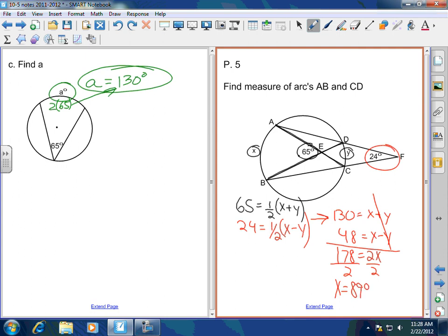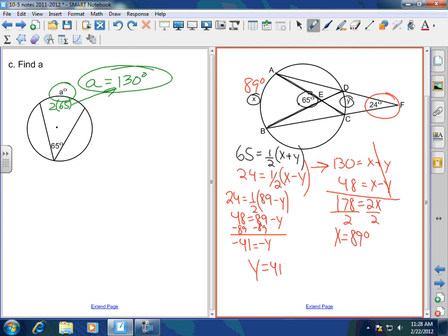So if X equals 89 degrees, now how do I find Y? Plug it into either one of these. Absolutely, gentlemen. 24 equals 1 half of 89 minus Y. Multiply 2 to both sides. 48 equals 89 minus Y. Subtract 89 to both sides. Negative 41 equals negative Y. So Y equals 41 degrees. So we just found both arcs. And that's it. Hope you guys learned a lot today. Have a great day. Thank you very much.